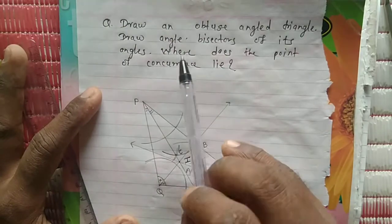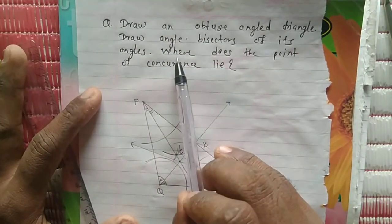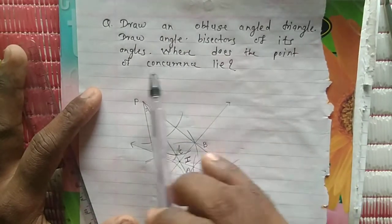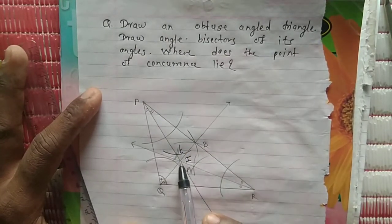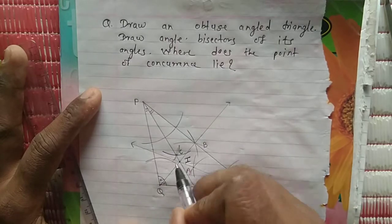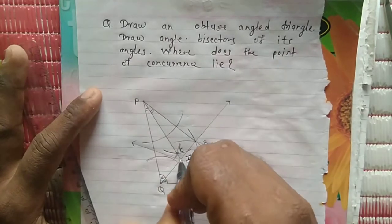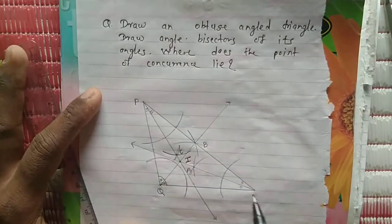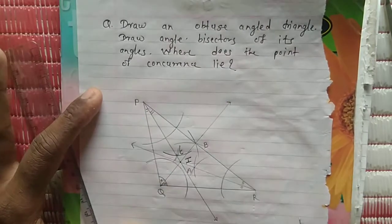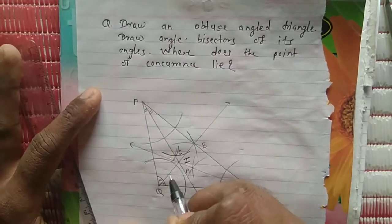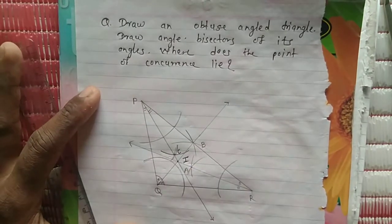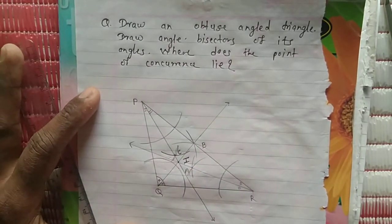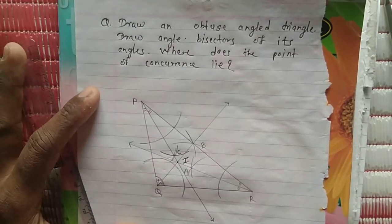So here we get our answer: where does the point of concurrence lie? The point of concurrence lies in the interior of the triangle.